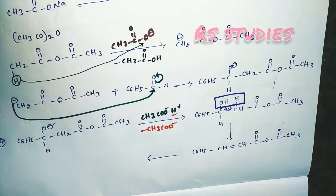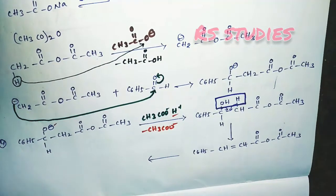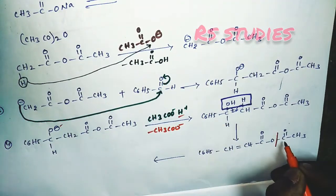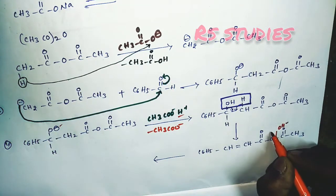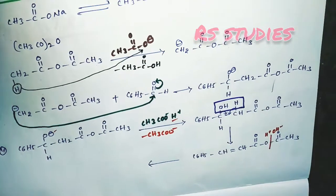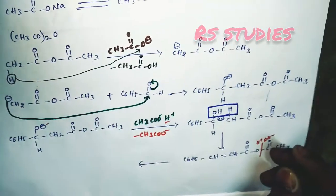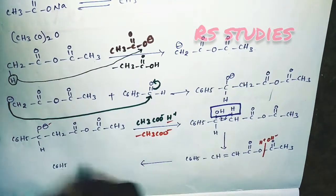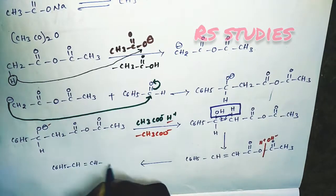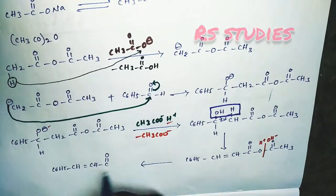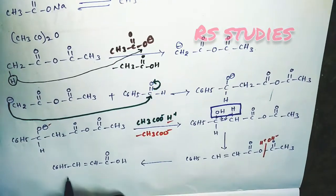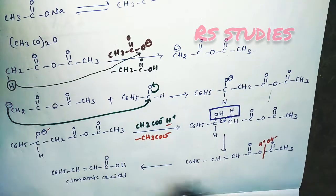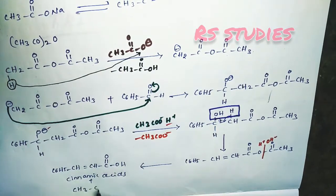Finally, hydrolysis takes place — bond breaks with H⁺, and OH⁻ attaches. After hydrolysis, the bond breaks and we get C6H5-CH=CH-COOH, which is cinnamic acid, plus CH3COOH (acetic acid) as the byproduct. So the final product is cinnamic acid: C6H5-CH=CH-COOH, and acetic acid CH3COOH is also formed.